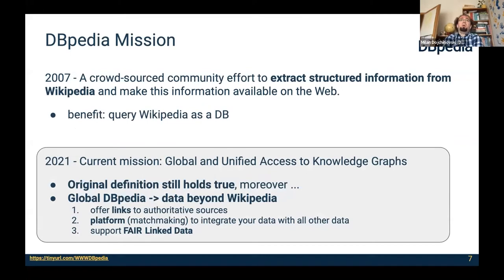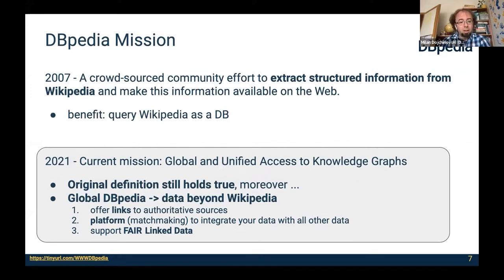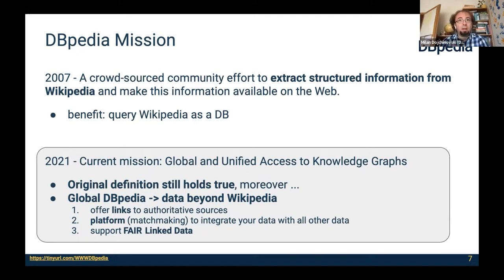Let me say a few words about the general mission of DBpedia. It all started back in 2007 as an idea of great enthusiasts — what if we could query the knowledge in Wikipedia the same way we query regular databases using SQL? The idea was to develop a tool that extracts knowledge from Wikipedia and exports it into structured, machine-readable format, so that humans can submit complex questions and get complex answers. The benefit was that we could query Wikipedia as a database.